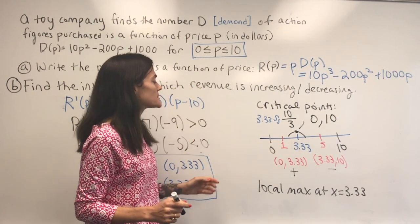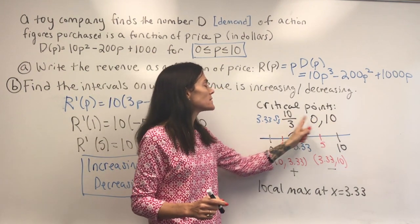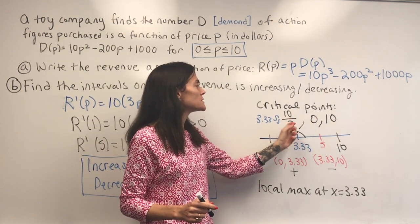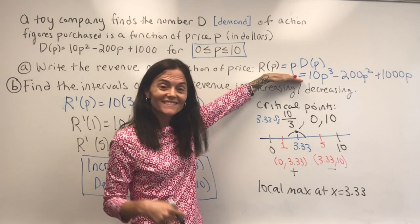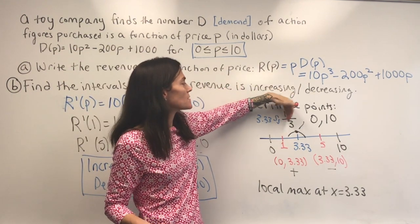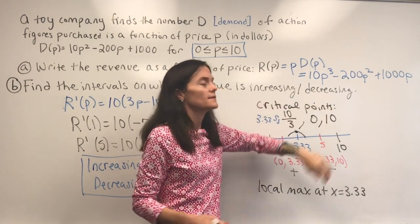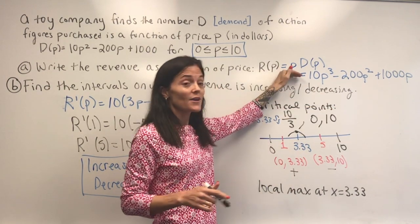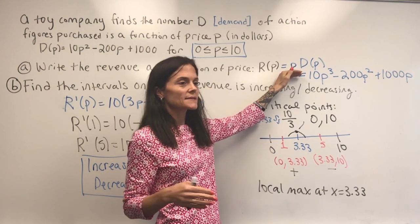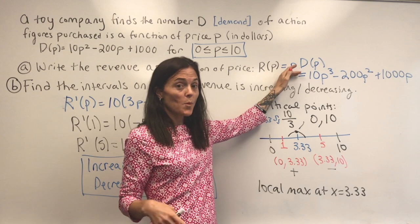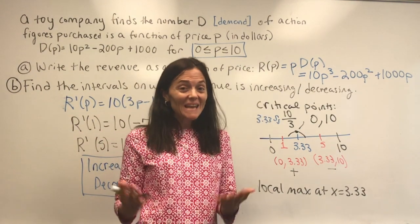For the global max, you have all the critical points. If you were interested, you would evaluate the original revenue function at 10/3, at 0, and at 10, and find the y-values. The highest one would be the global max, and the lowest one would be the global min — we've done some of that in class.